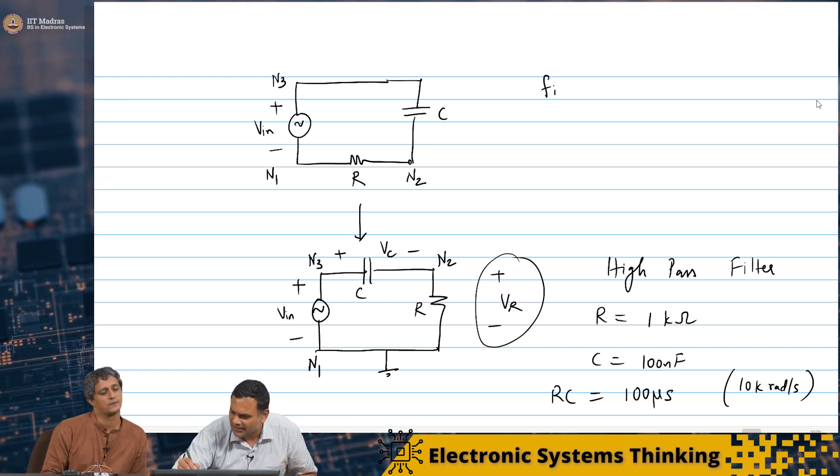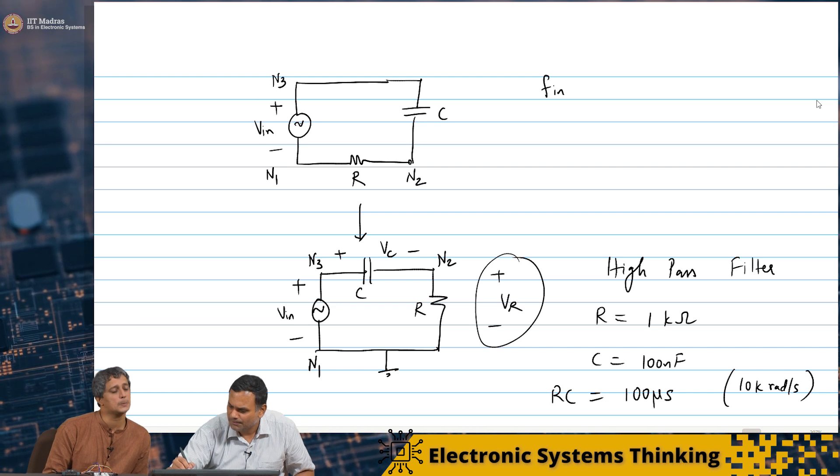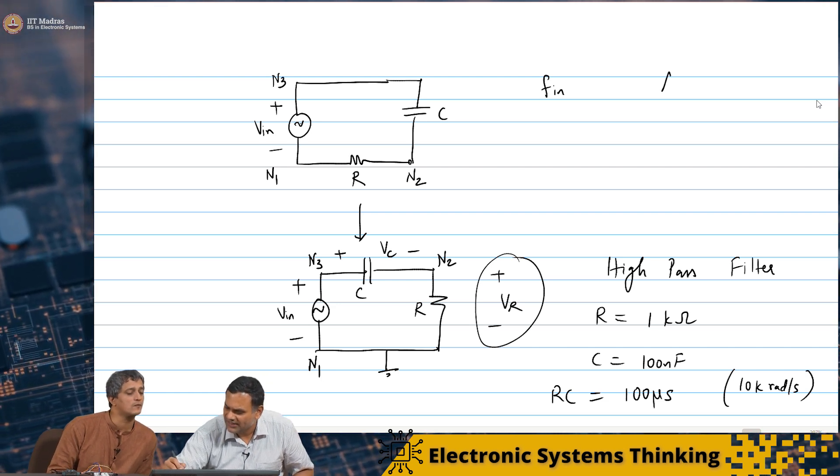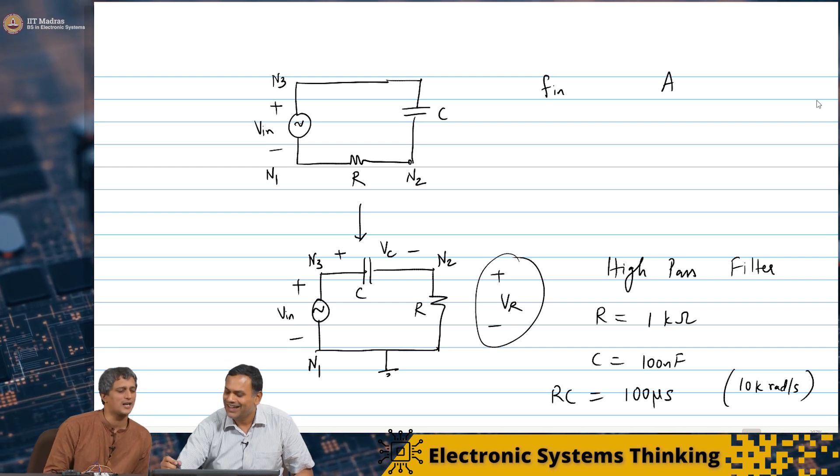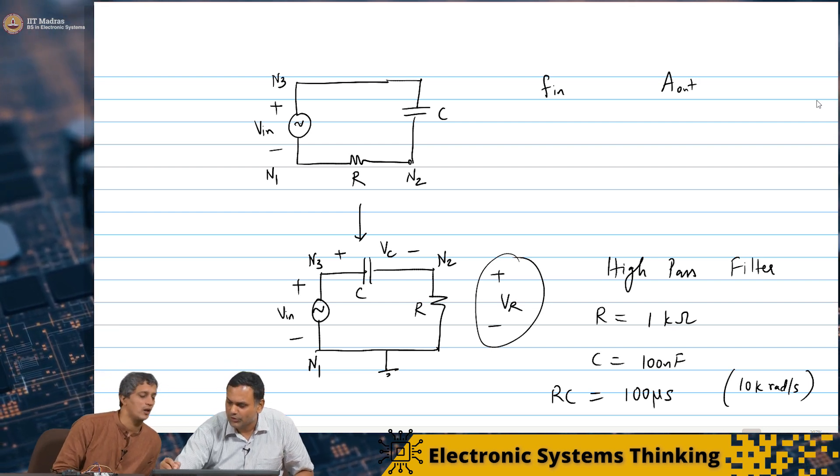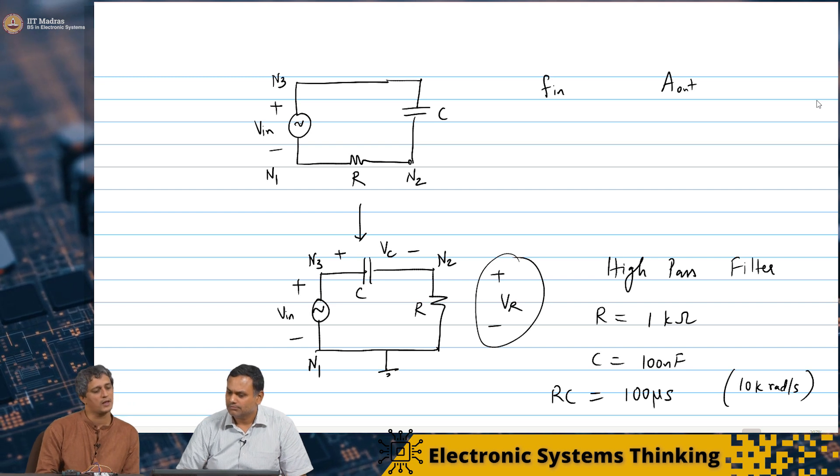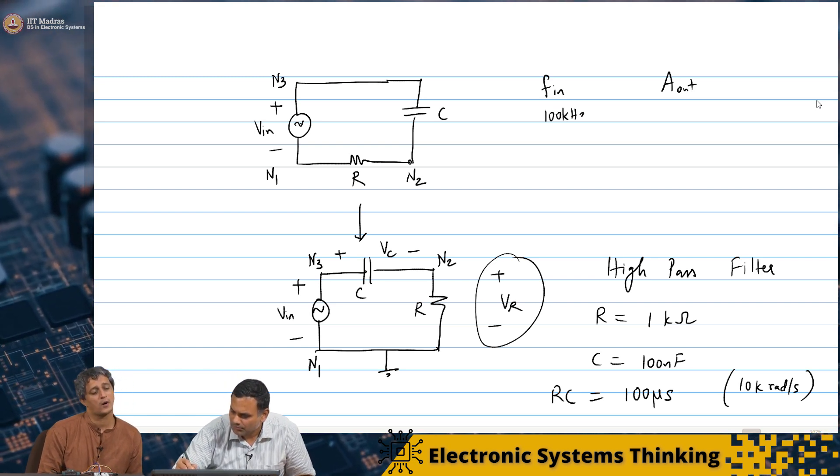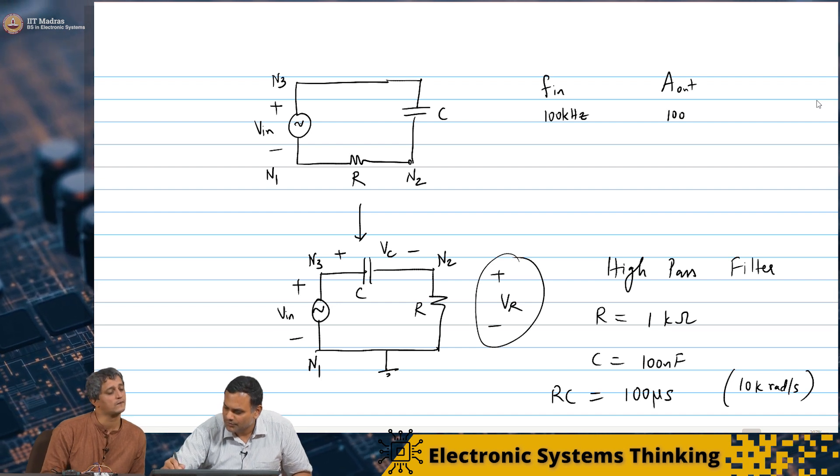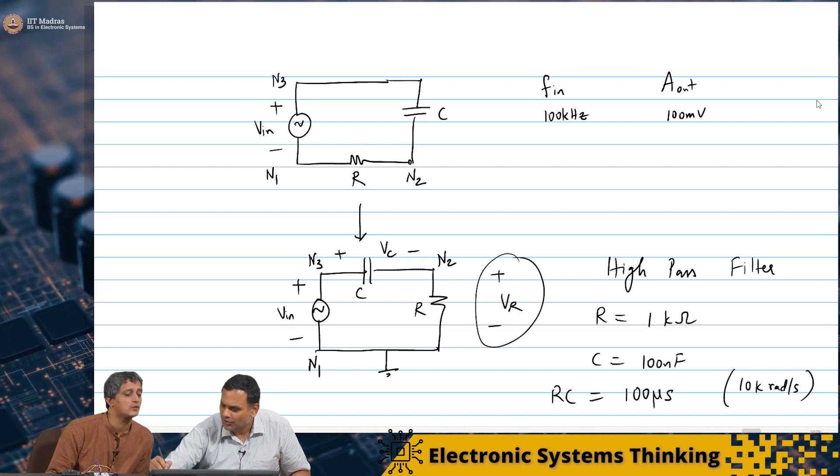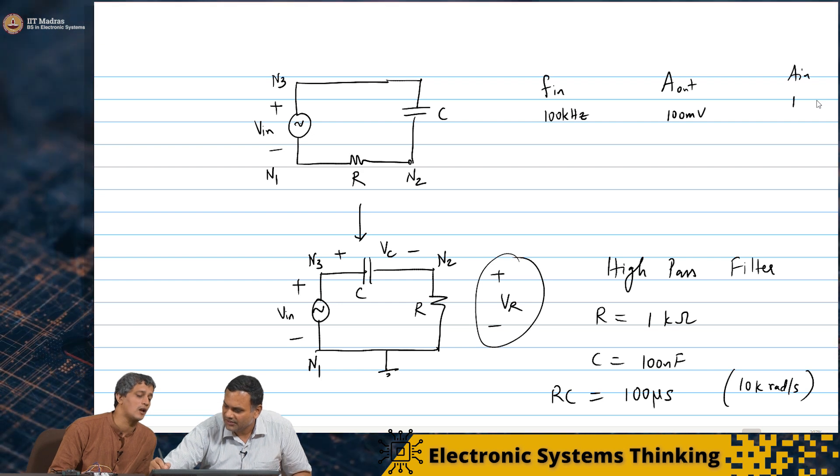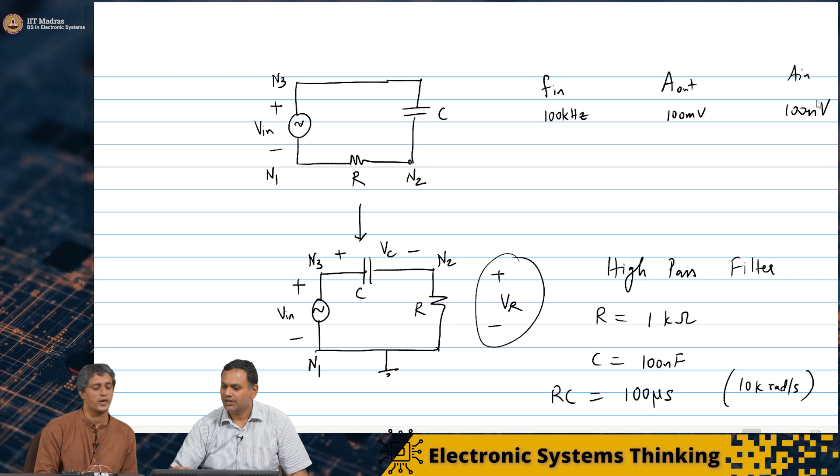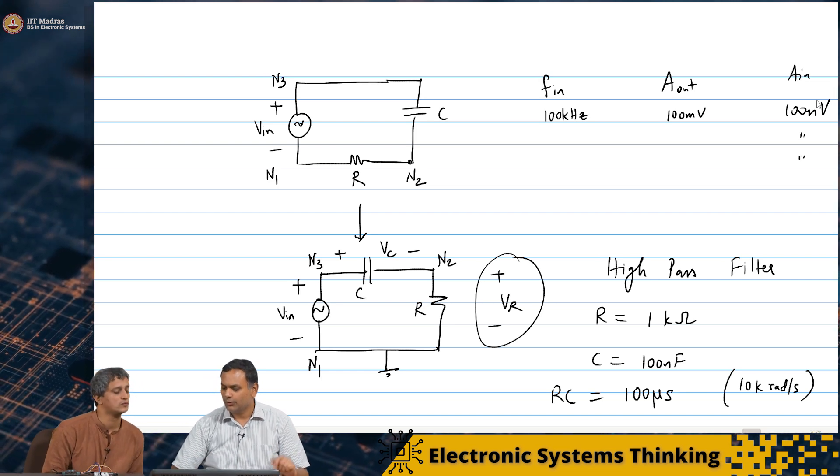So this is input frequency and input amplitude. I'll call this A. No, but that is fixed. So we'll just look at the output amplitude, A out. Great. So for 100 kilohertz we got 100 millivolt. And for all of these A in is 100 millivolt. For all of the things that we are going to monitor.